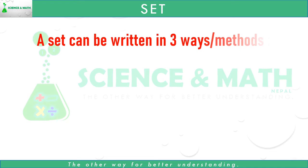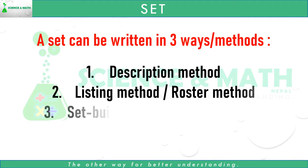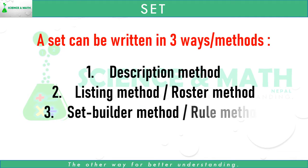A set can be written in three ways or methods. They are description method, listing method (also called roster method), and set builder method (also called rule method).